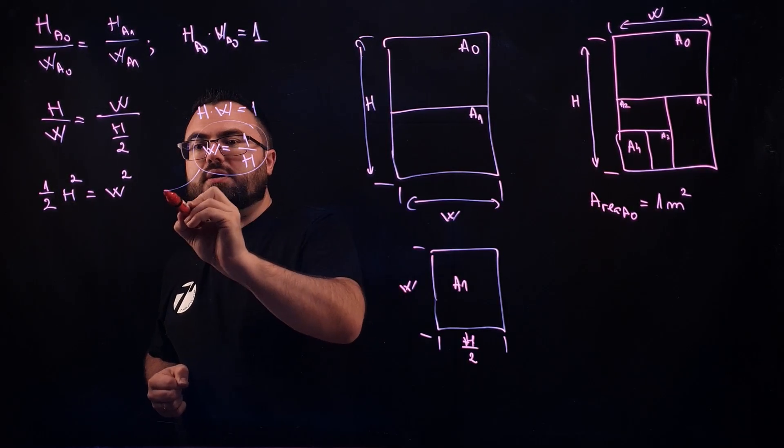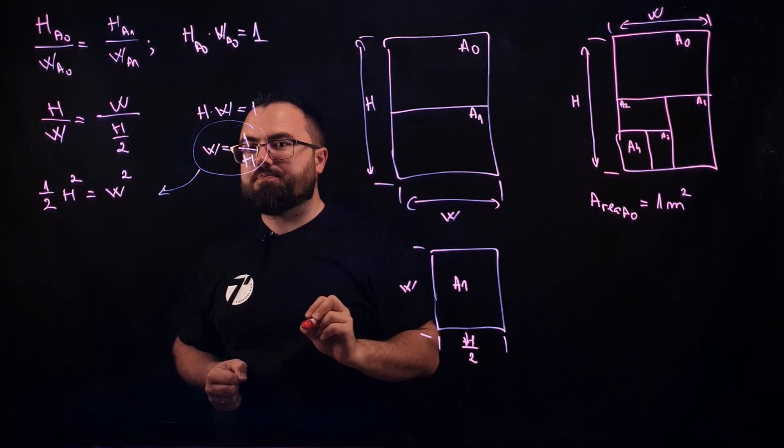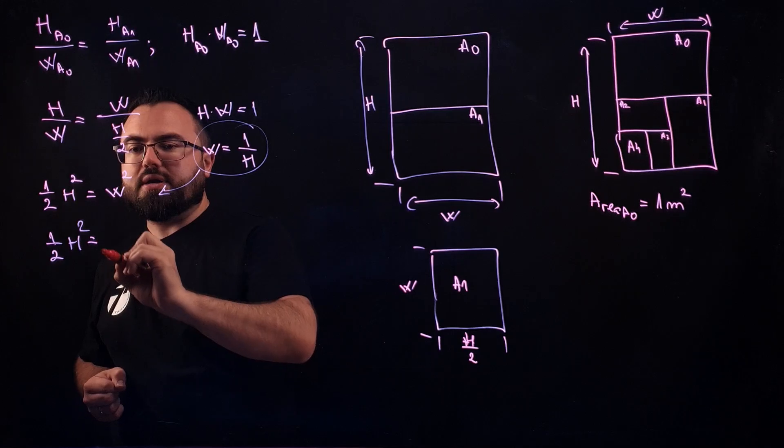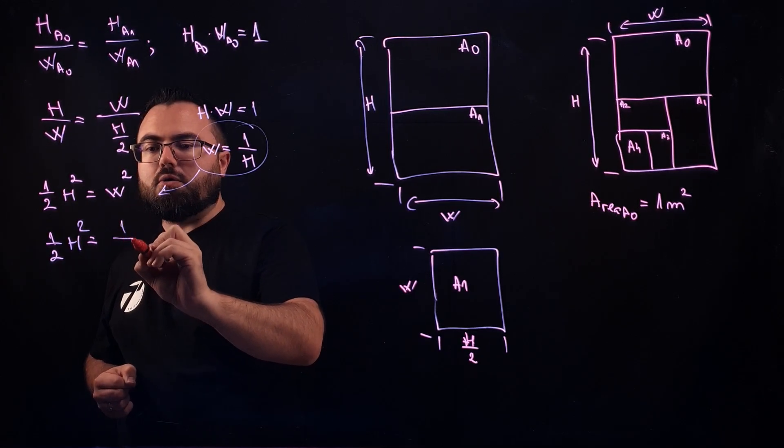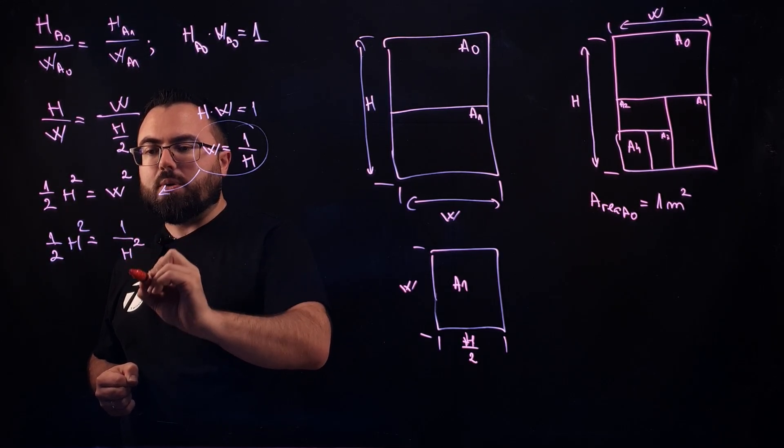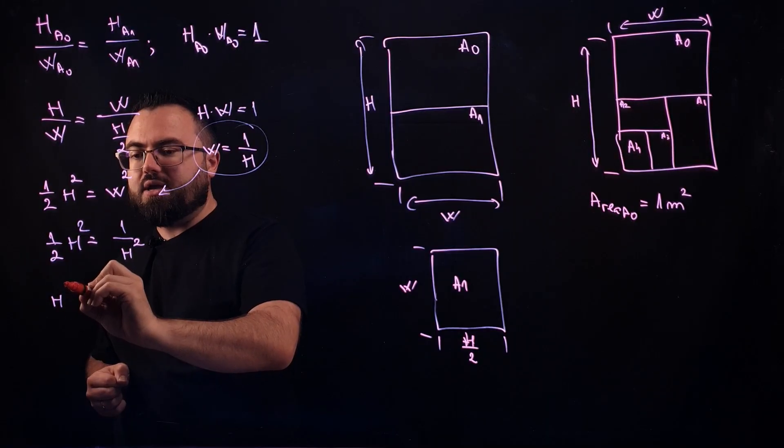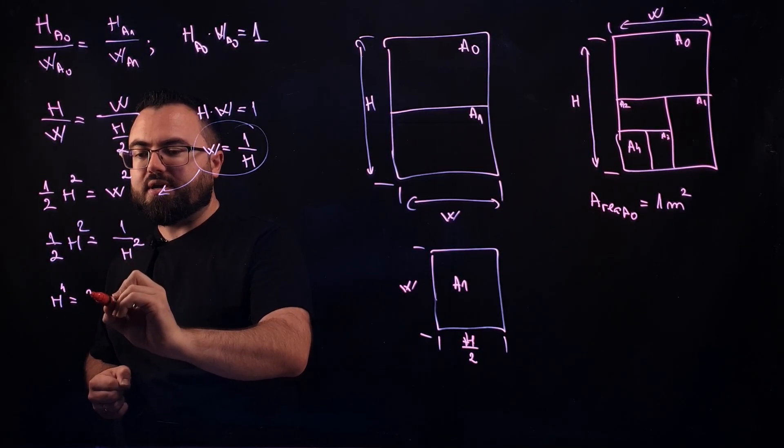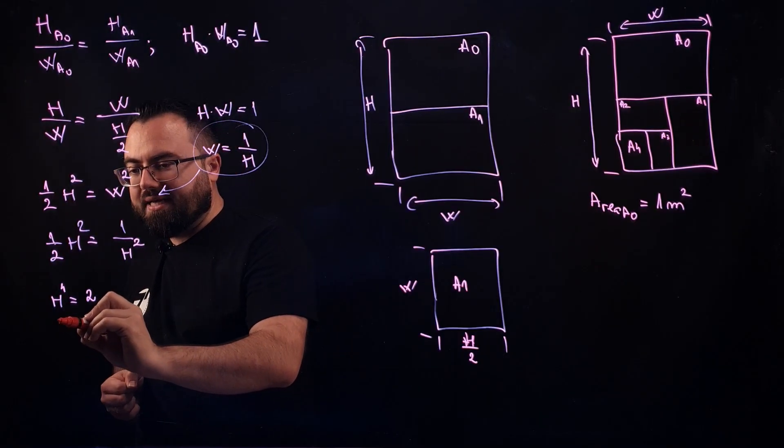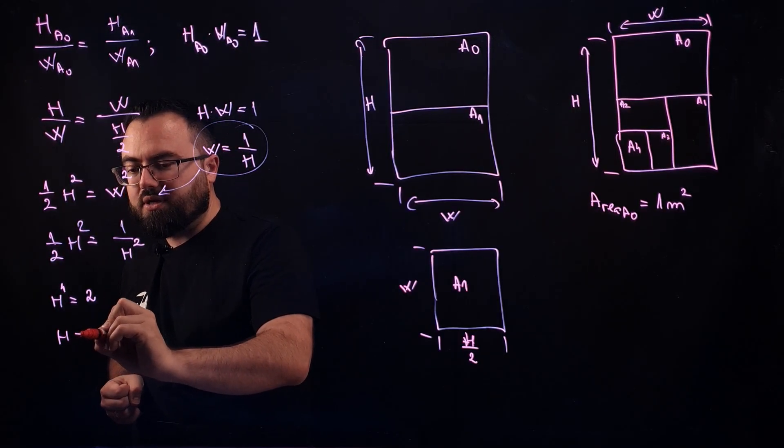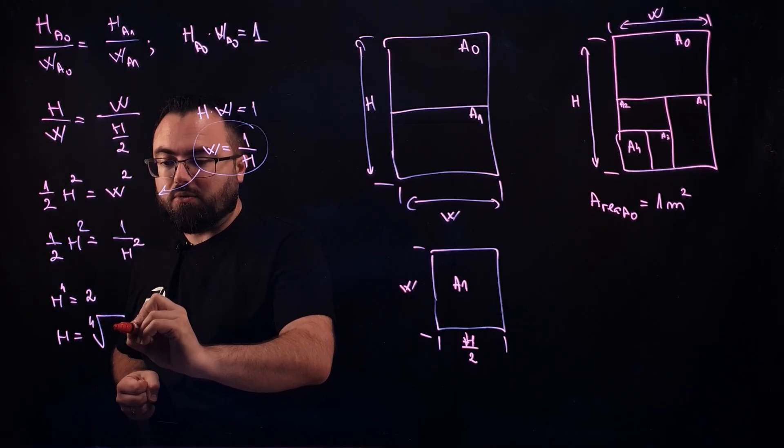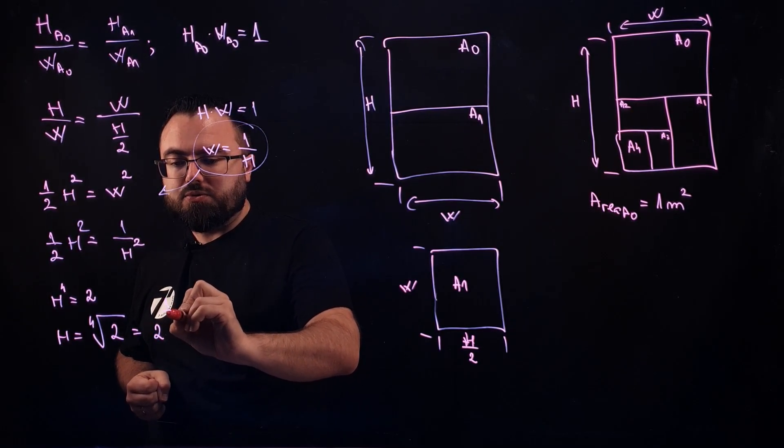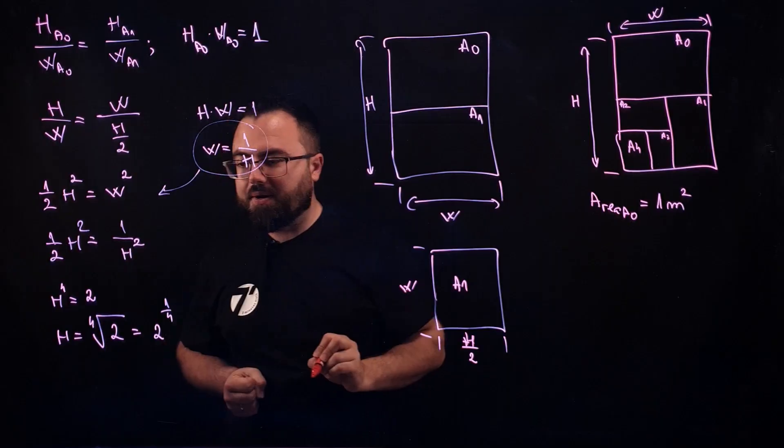We take this one and replace it right here. So we have 1 over 2 H squared equals to 1 over H squared. And that brings us to H to the fourth power equals, and we take the other one over there, it's 2. That means that H equals the root fourth order of 2, or say, 2 to the 1 over 4 power.